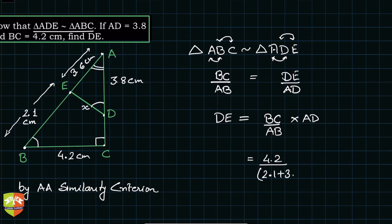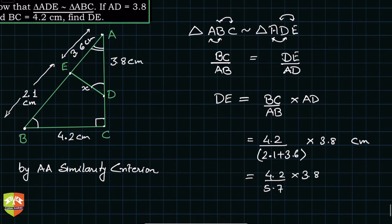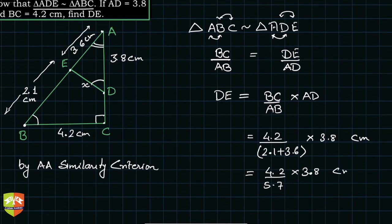And here into AD, AD is 3.8, and the result will be in centimeters. So let's solve this. So what is this? 4.2 divided by 5.7 into 3.8 centimeters. So this goes by 2 and this goes 3. 19 times 2 is 38, 19 times 3 is 57, and this is simply 14. So 1.4 into 2 is 2.8 centimeters.